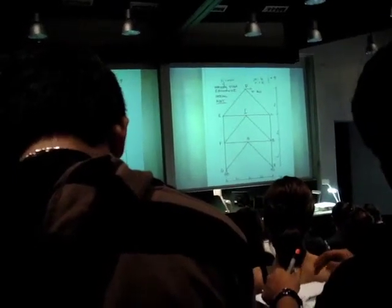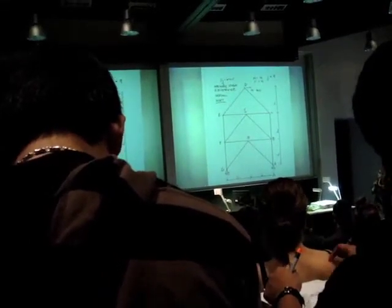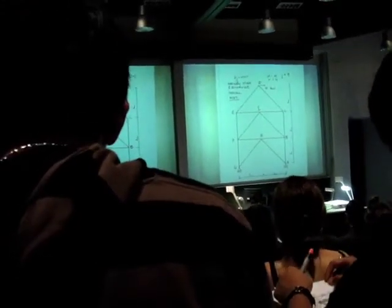If you look at whether or not 2J equals M plus R, in this case, 2J does equal that. Why does it equal that?